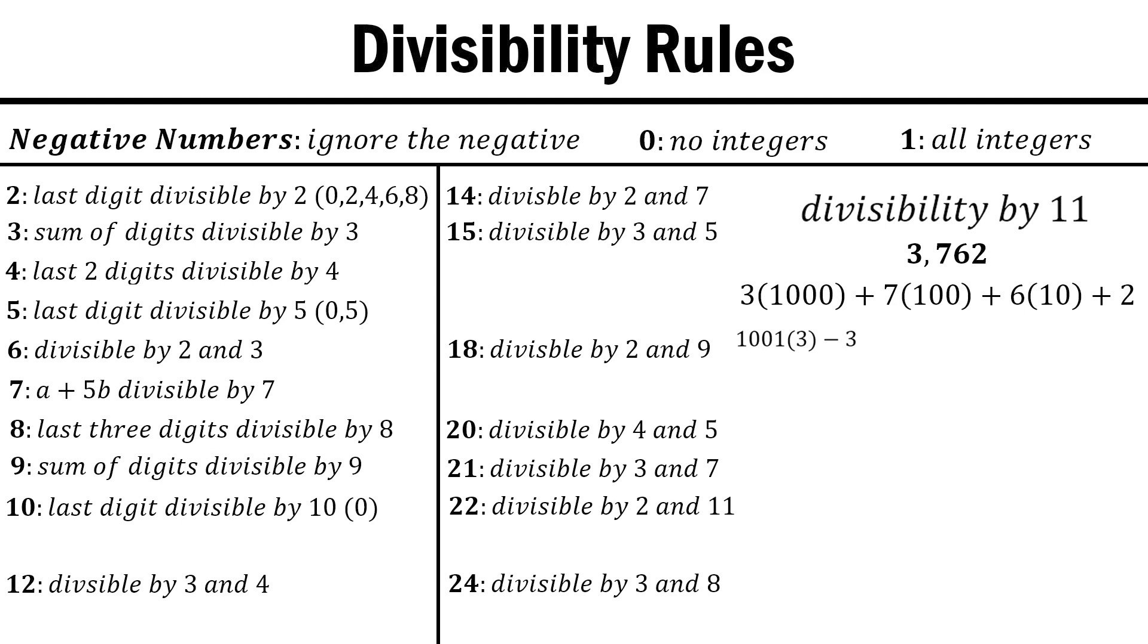7 times 100 becomes 7 times 99 plus 7 times 1, and 6 times 10 turns into 6 times 11 minus 6 times 1. 1001, 99, and 11 are all multiples of 11, so we can ignore them, and we are left with negative 3 plus 7 minus 6 plus 2.